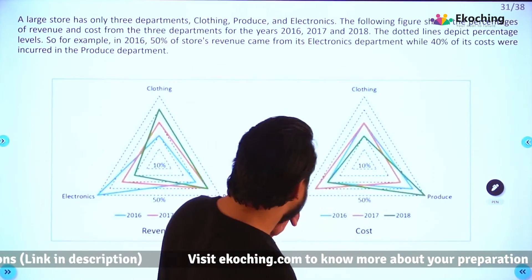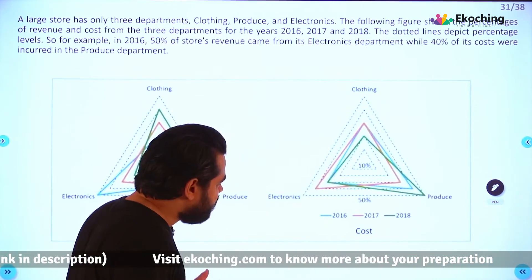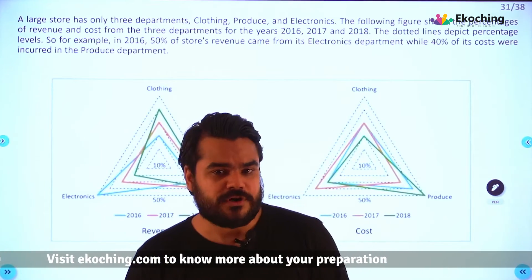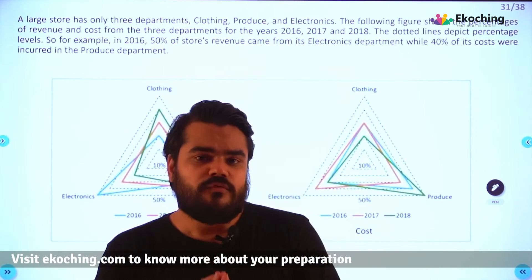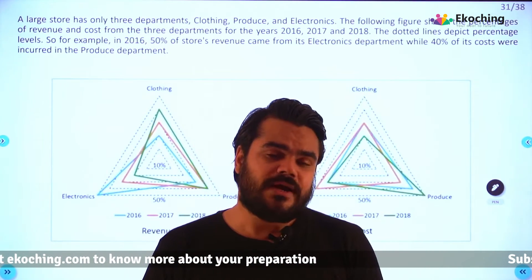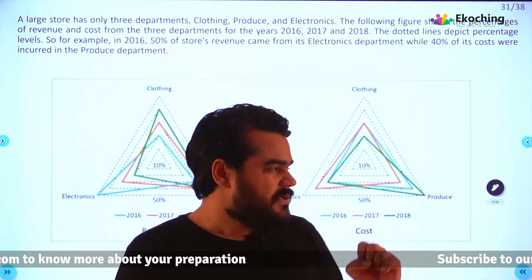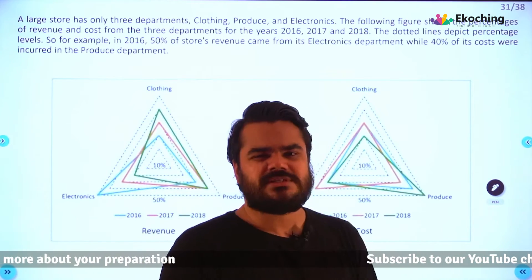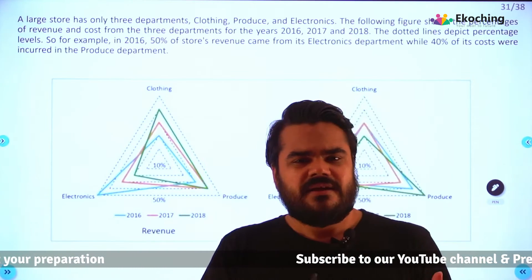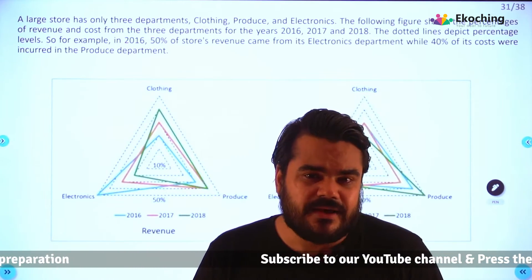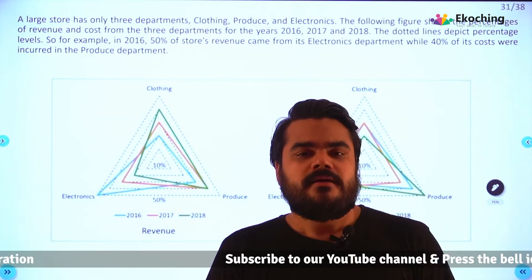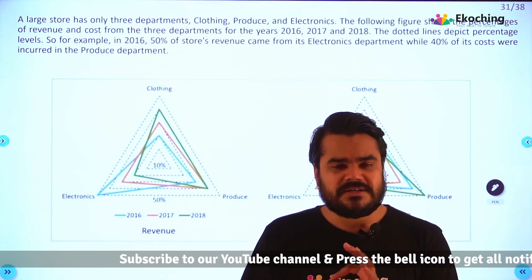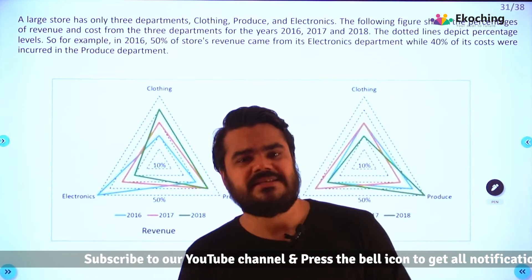While 40% of the store's costs were incurred in the produce department. Values are in multiples of 10: 10, 20, 30, 40. It is more often than not a very easy type of graph to interpret.